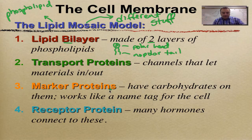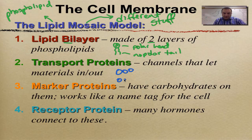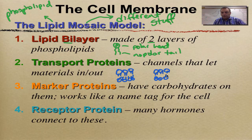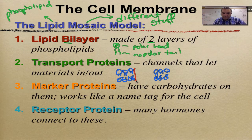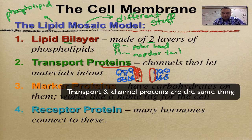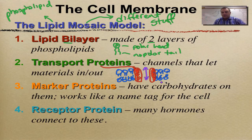We have transport proteins, and they're going to look like this. So we have two layers of phospholipids — the heads are going to go to the outside and the tails are going to go to the inside. There's a channel protein drawn here with a little pathway through it. The channel protein allows things to move in and to move out.